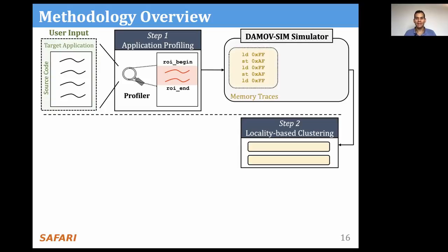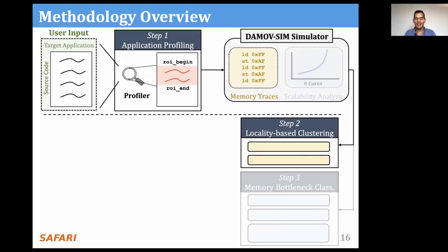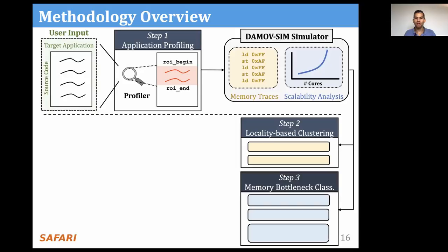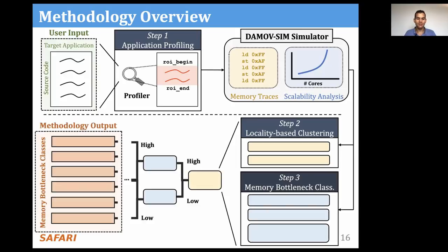In step one, we profile the application and identify functions that suffer from memory bottlenecks using a hardware profiling tool, and use our new simulator called DaMovSim to evaluate performance benefits of different data movement mitigation techniques and collect key metrics. In step two, locality-based clustering, we use architecture-independent profiling tools to classify the memory access behavior of each application. Then in step three, we collect architecture-dependent metrics and perform a scalability analysis. Based on that, we can classify applications into six different classes of data movement bottlenecks and correlate each class with the most suitable data movement mitigation technique.